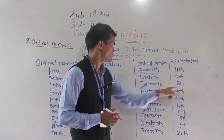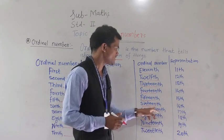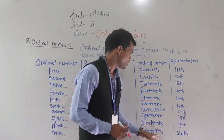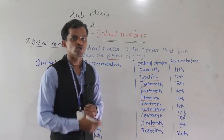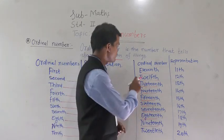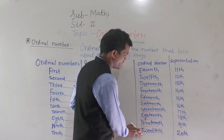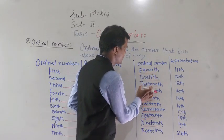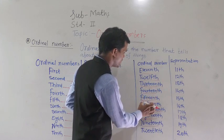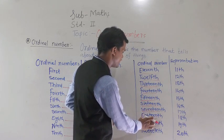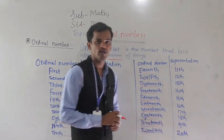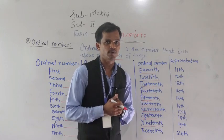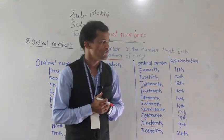Then thirteenth, fourteenth, fifteenth, sixteenth, seventeenth, eighteenth, nineteenth, and twentieth. These are very simple. Only twelve and twenty have different spellings; otherwise you know the spellings of eleven, thirteen, fourteen, fifteen, sixteen, seventeen, eighteen, and nineteen. You only have to write 'th' as a suffix after the number's spelling to form the ordinal number spelling.